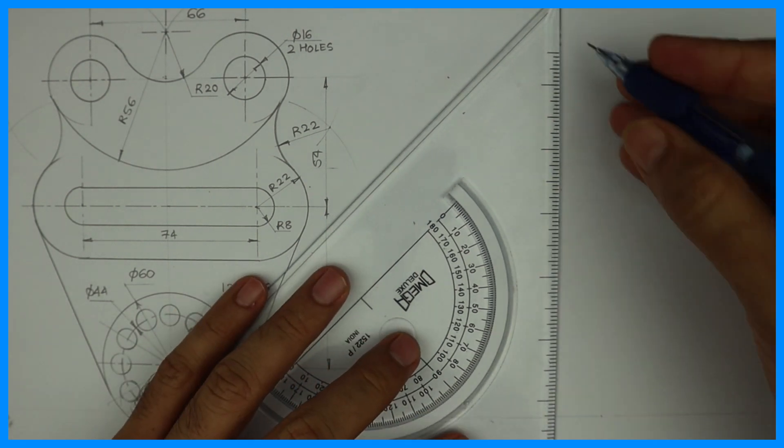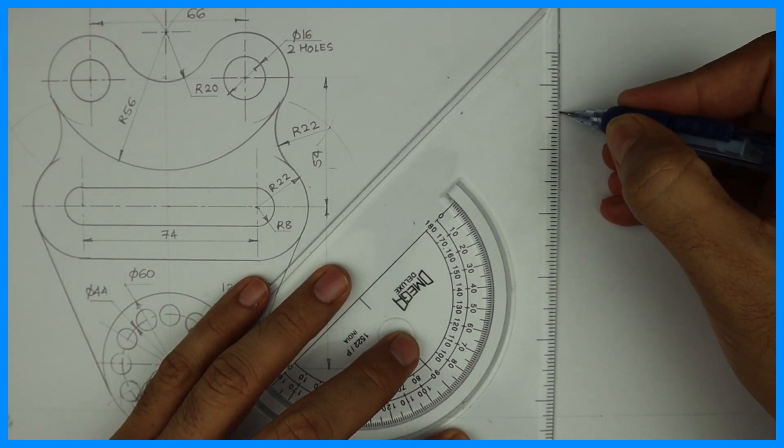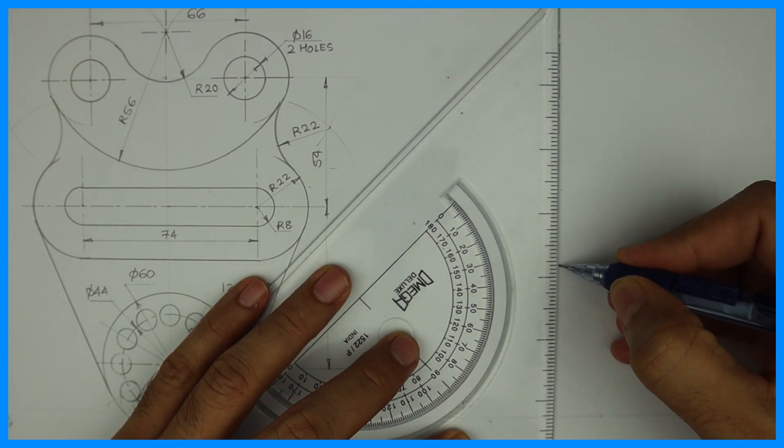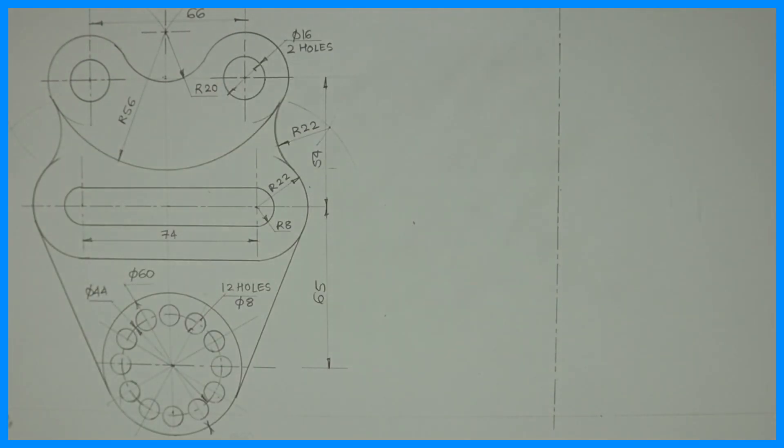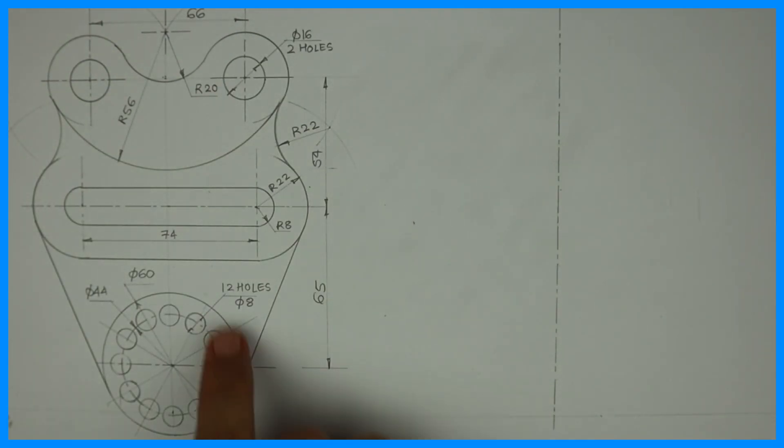Welcome to technical drawing. Today we are going to learn machine drawing. First we will draw the axis line, then after drawing the axis line we'll draw this horizontal line, the middle one.